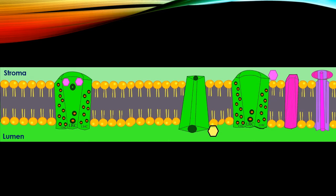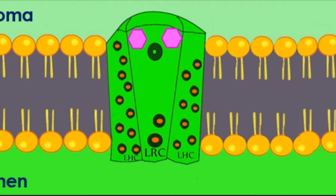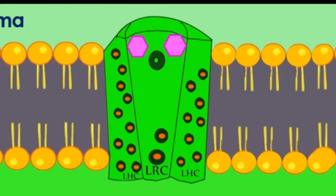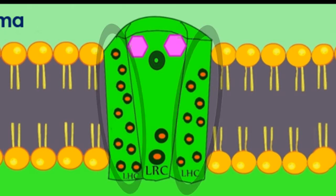and within the membrane lies the lumen. The first complex is photosystem II, which may also be called P680. This is because in the red part of the visible spectrum, it absorbs light maximally at 680 nanometers. Photosystem II houses light-harvesting complexes, which house many chlorophyll molecules that absorb light. The light reaction center of photosystem II consists of multiple proteins and pigment molecules.